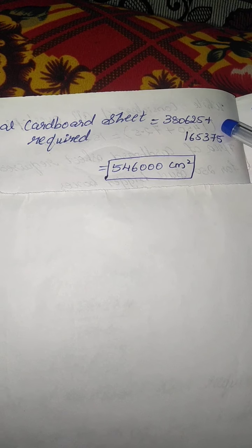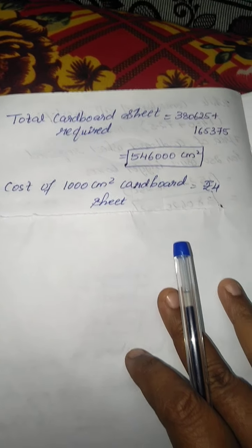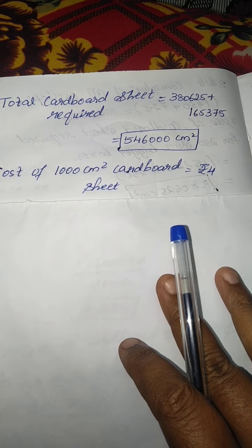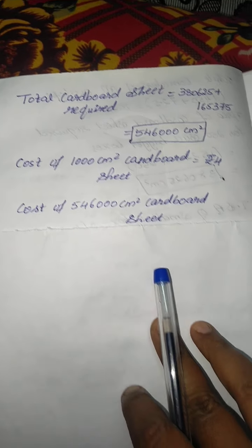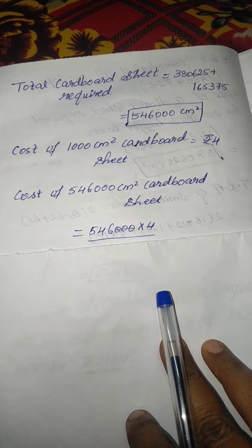Now on adding both the areas, I will get the total area as 546,000 centimeter square. But what they have given - cost of 1000 centimeter square of cardboard is rupees 4. So find the cost of total area.